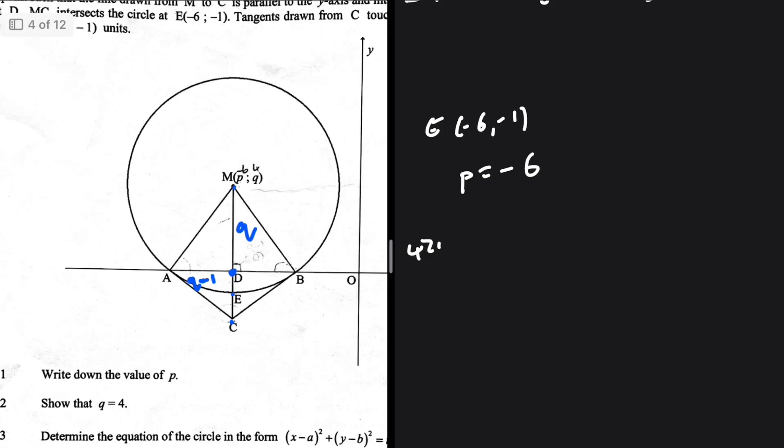MD is parallel to the y-axis, so they only differ in the y values. We have AD, we have MD, and we also need to figure out MA. MA is a radius, and ME is also a radius, so ME should equal MA. ME: the y-value at M is q and the y-value at E is minus one, so ME is q plus one.